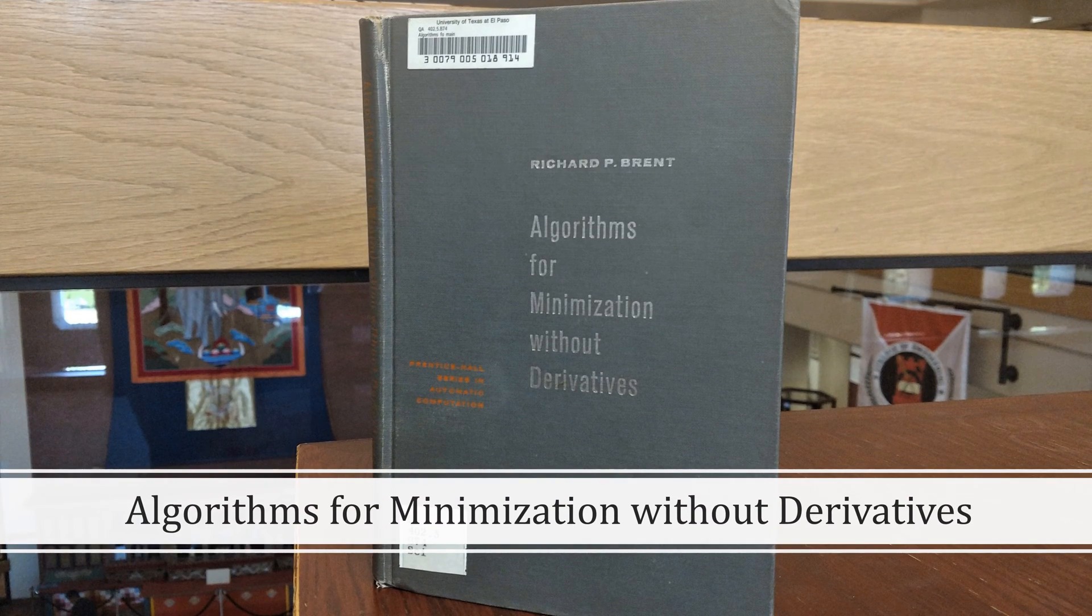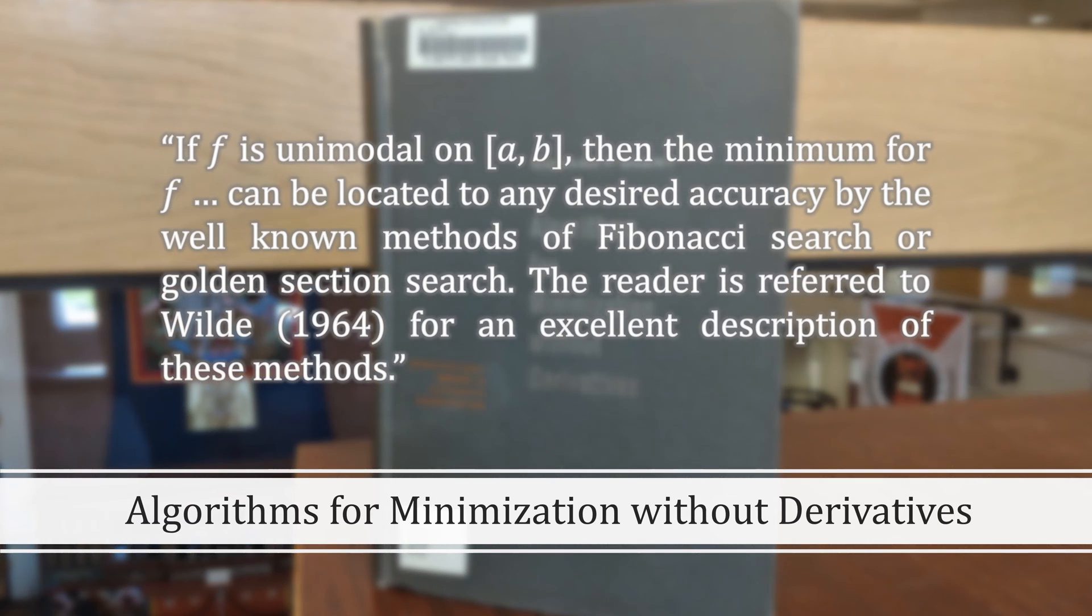Let's refer back to Algorithms for Minimization Without Derivatives by Richard Brent. In it, he writes, if f is unimodal on the interval [a,b], then the minimum for f can be located to any desired accuracy by the well-known methods of Fibonacci search or golden section search. The reader is referred to Wilde for an excellent description of these methods.